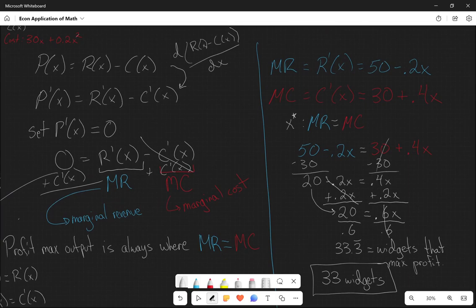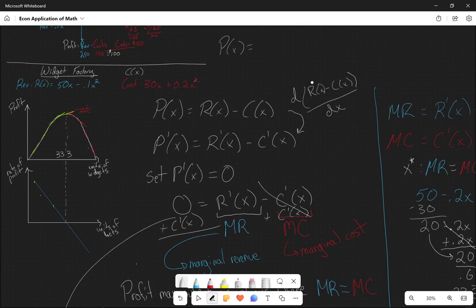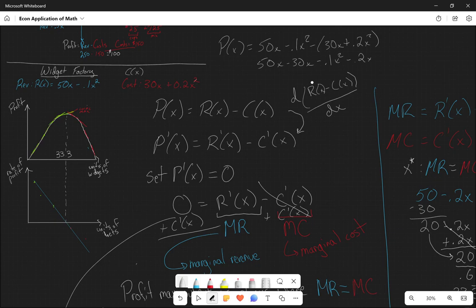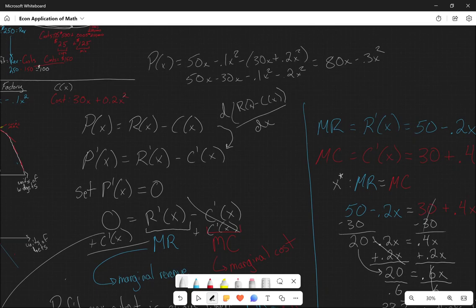And if we don't believe this, we can always create our profit function again and we can plug in 33 and we can plug in 34 as just a way for us to double check ourselves. So again, our profit function P of X is equal to 50X minus 0.1X squared minus 30X plus 0.2X squared. And so this is going to be 50X minus 30X minus 0.1X squared minus 0.2X squared. So this whole thing is going to be 80X minus 0.3X squared. Yeah, thank you. 20X.